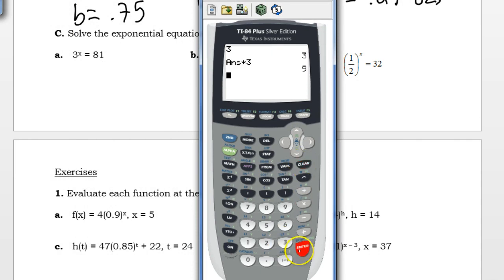3 times itself. 2 times. 3 times. 4 times. It took me 4 times to get to 81. So I know x is 4.